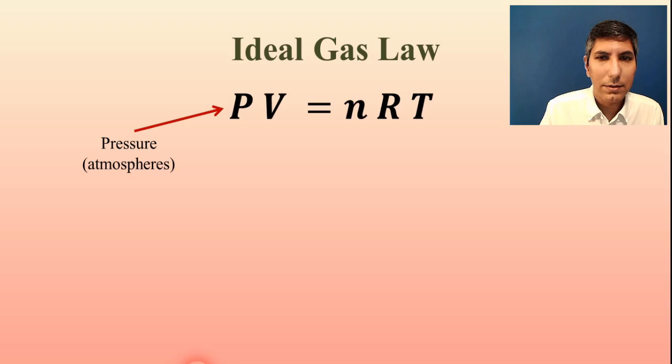P stands for pressure. And specifically, in this gas law, pressure needs to be in atmospheres. And so that means if for some reason you get a pressure that's not in atmospheres, you're going to have to convert it to atmospheres.